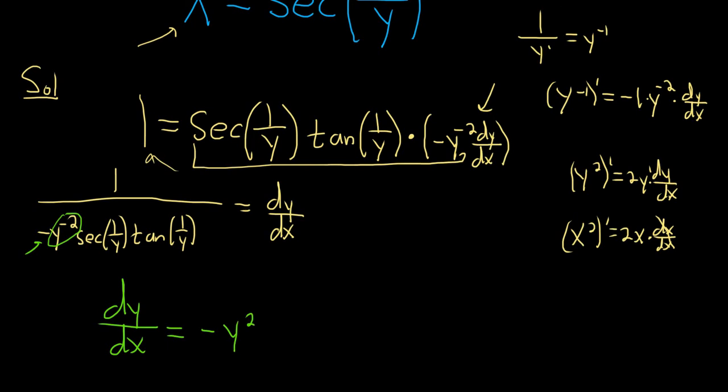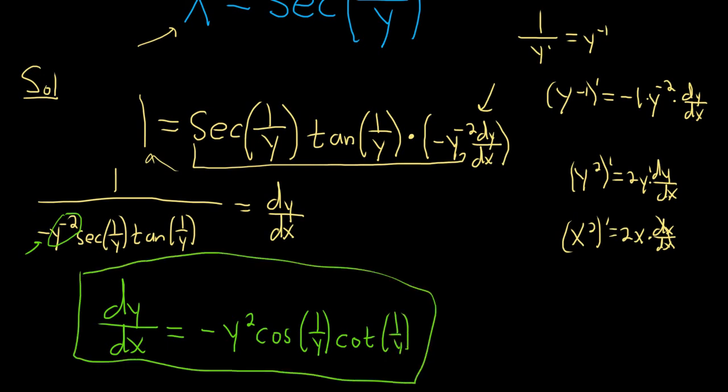And then we can rewrite this. You know 1 over secant is cosine. And then 1 over tangent is cotangent. So a much much prettier way to write the answer.